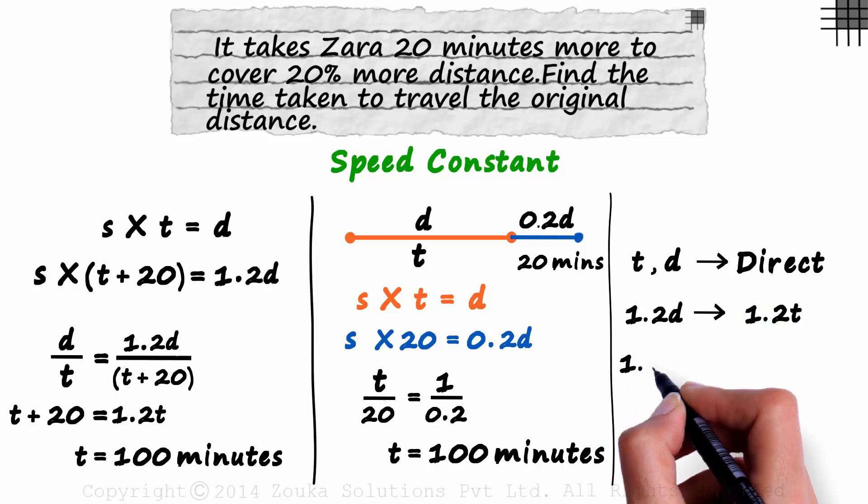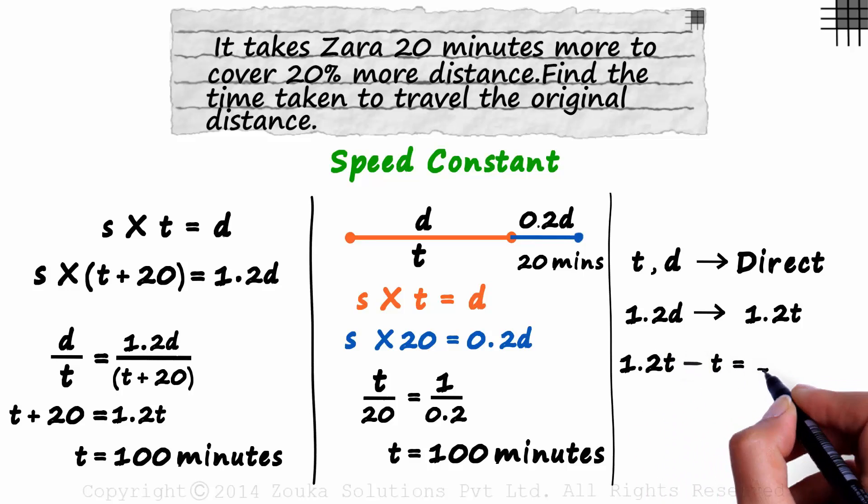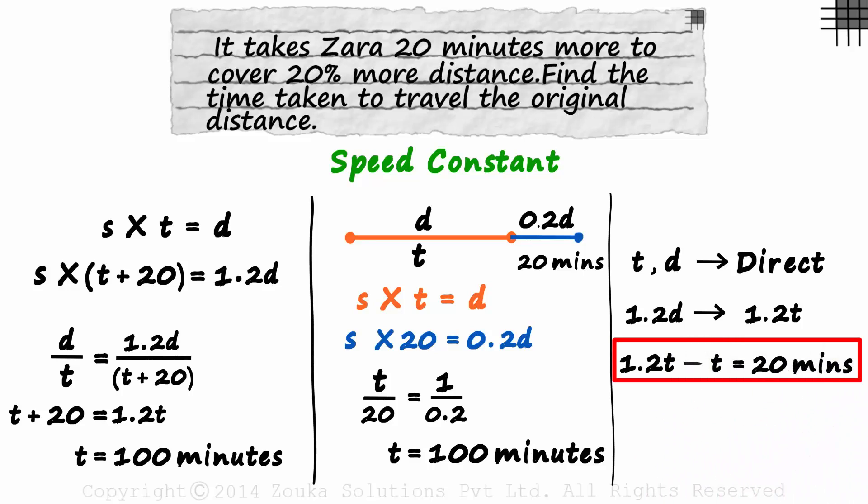So 1.2T minus T will equal 20 minutes. And this gives us T as 100 minutes. And this was really fast. If you understand variation, you have to use this technique. Different books will give you different solutions, but you have to choose what you are most comfortable with. There is no point in trying to use the fastest technique if you don't understand it. In every problem you look at in the future sessions, we will understand different ways to tackle it.